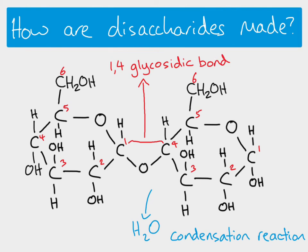This is known as a 1-4 glycosidic bond. A glycosidic bond is simply the bond between two monosaccharides — you get glycosidic bonds when you make disaccharides and also when you make polysaccharides. It's called 1-4 because it joins carbon one and carbon four together.